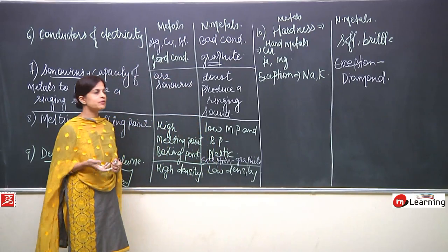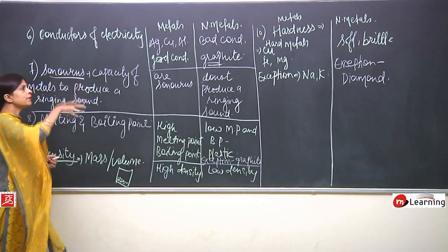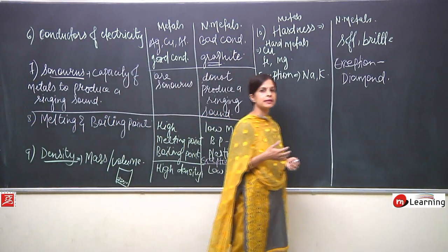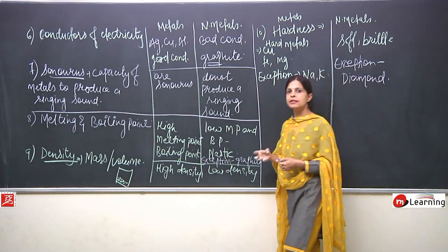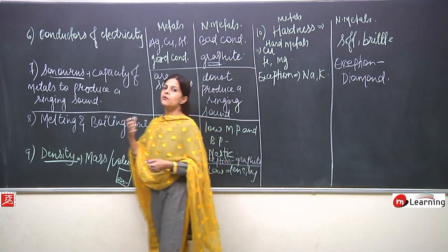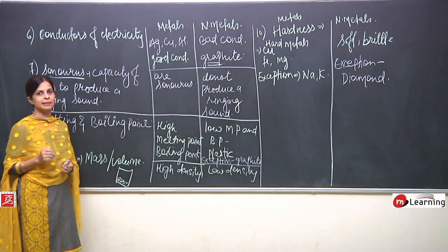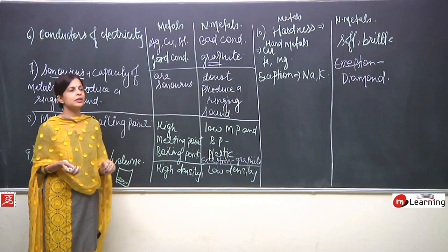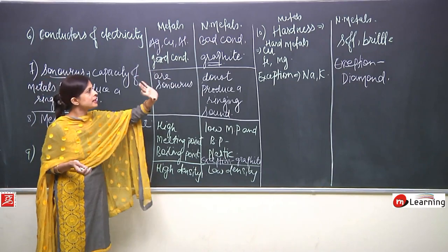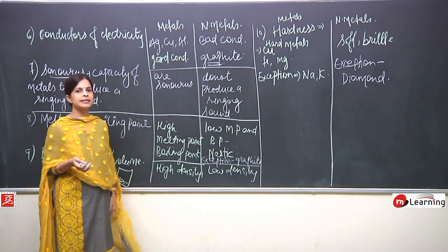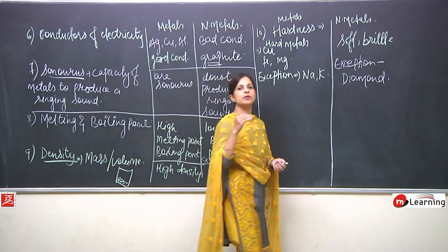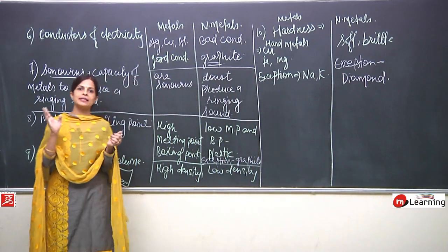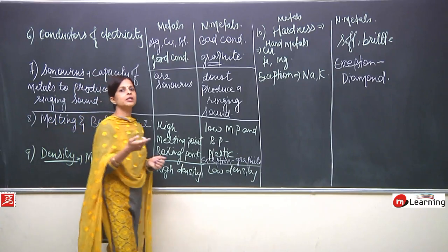We have discussed many physical properties of metals and non-metals, but we cannot distinguish metals from non-metals on the basis of physical properties alone — because for every property there is one or the other exception. For that distinction we need to read further about chemical properties.